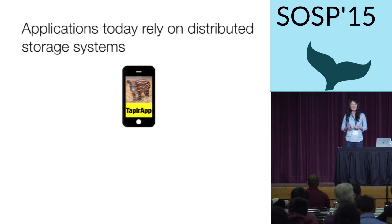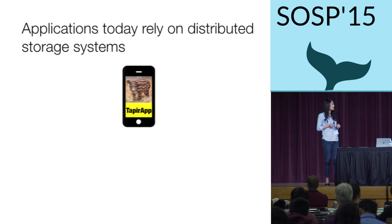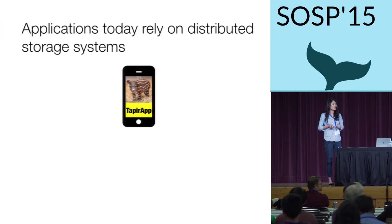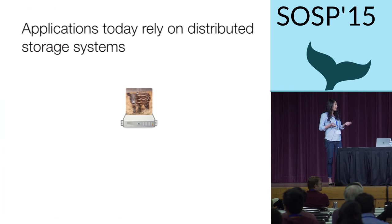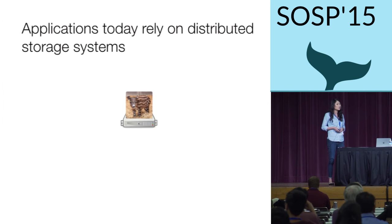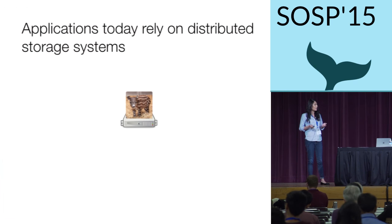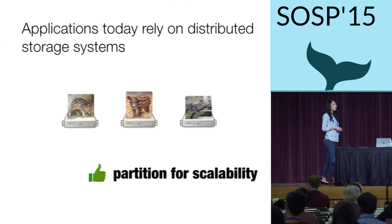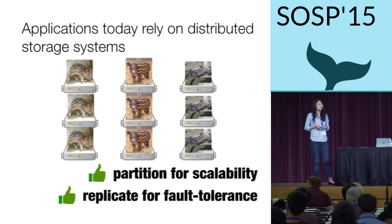Your first question might be: what's a tapir? In addition to being the name of our system, a tapir is a large, pig-like mammal that is particularly adorable when it's a baby. A more relevant question is where you're going to store all of these pictures. Like many application programmers today, I'm going to rely on a distributed storage system, which will allow me to scale up by partitioning my photos across many machines and replicate each partition for fault tolerance.